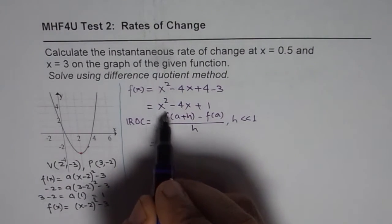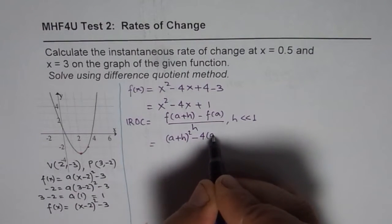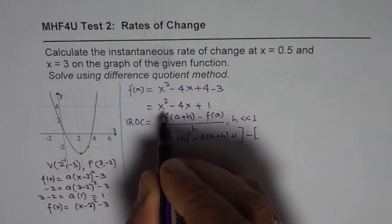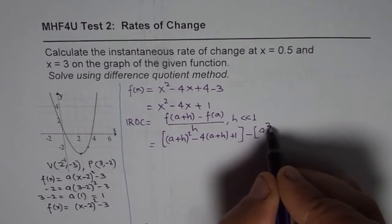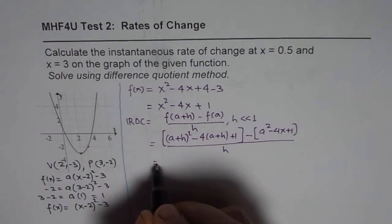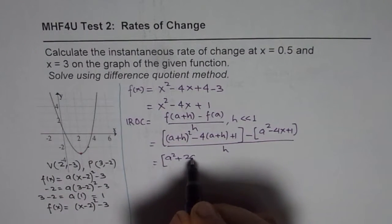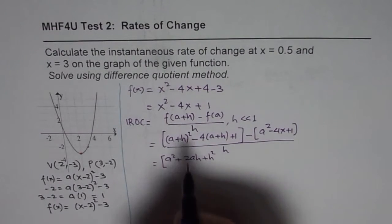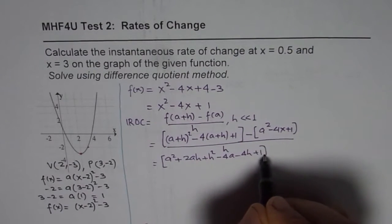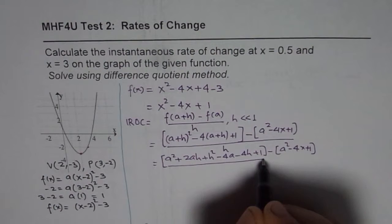Replacing x with (a + h) in f(x) = x² - 4x + 1, we get f(a + h) equals (a + h)² minus 4(a + h) plus 1. So the difference quotient is f(a + h) minus f(a) — that is the function with x replaced by a — all divided by h. Expanding (a + h)² gives a² + 2ah + h², then minus 4a minus 4h, plus 1, minus the three terms a² minus 4a plus 1.